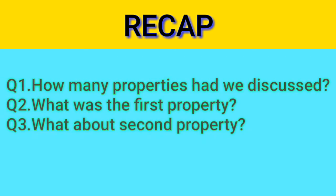Question number one: how many properties had we discussed? The answer is two properties. Question number two: what was the first property? The first property is that if a number is divisible by another number, then the former number is divisible by all factors of the latter. For example, 12 is divisible by 6, so 1, 2, 3, and 6 are the factors of 12.